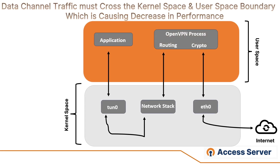Since OpenVPN is a user space application, data channel traffic must cross the kernel space and user space boundary, which causes a decrease in performance. As you see on this slide, packets come in from the internet through Ethernet zero, which is our network interface. When a packet comes in, it needs to go to user space so OpenVPN can process it — meaning decrypt the packet, since traffic through the tunnel is encrypted — and then possibly do some routing or send it back to kernel space, then to the tunnel interface, and finally back to user space to the application. Exchanging data between these two layers costs processing power, which introduces a bottleneck for OpenVPN speed.